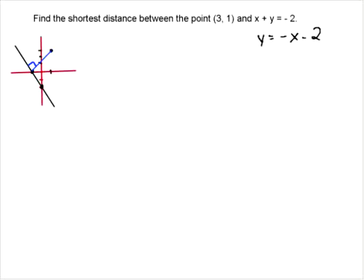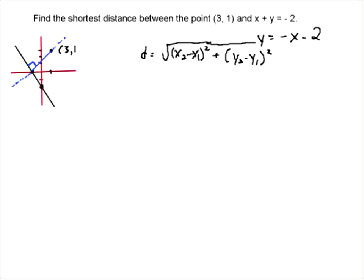If it's perpendicular, the first thing we need to do is determine the equation of this perpendicular line. We're going to extend this line and find its equation, because when we use the distance formula — which is the square root of (x2 minus x1) squared plus (y2 minus y1) squared — we need both coordinates. Let me make a correction: the point is actually (3, 1), not (1, 3). So (3, 1) is here, and we need to find the point where the two lines intersect.